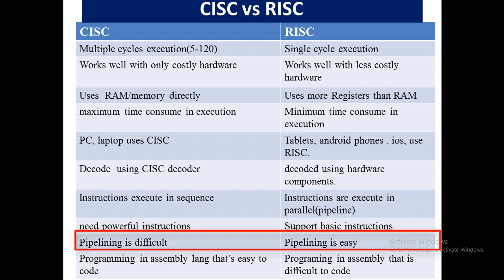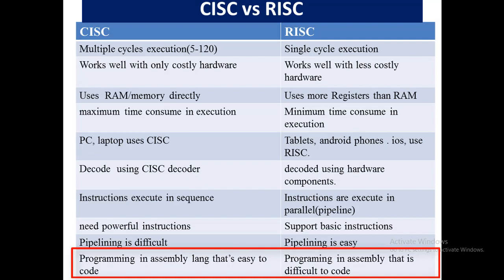Programming in assembly language is easy in CISC because there is no limitation on instructions — we can perform the task by adding hundreds or thousands of instructions. While on the other hand in RISC, there is a restriction to complete the task in minimum instructions, so writing assembly language code for RISC is difficult. But at the same time it takes very less time to execute, while in CISC the same instructions take more time to execute. This is all about the differences between CISC and RISC.